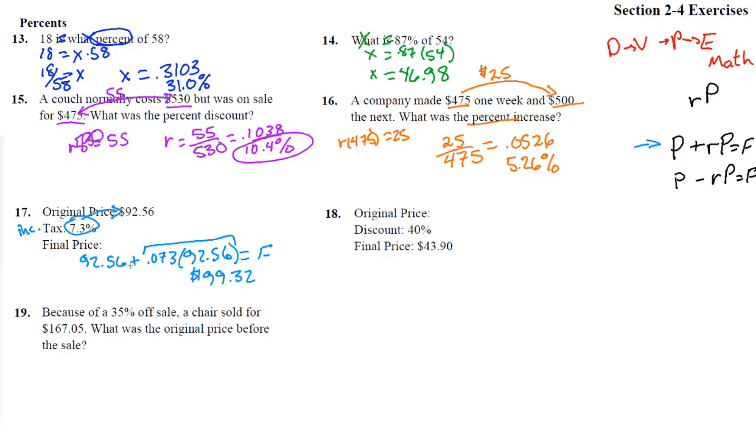Now I want to take just a moment and note that we could have, you can see this by the distributive property, with this guy moving in. You could have done 92.56 times itself plus 7.3%. So that's kind of the shortcut. You could take 1.073 and take the 7.3 and increase it onto the 1, and you'll still get 99.32.